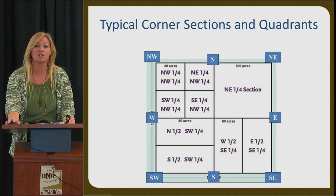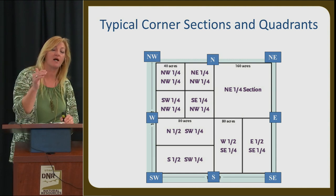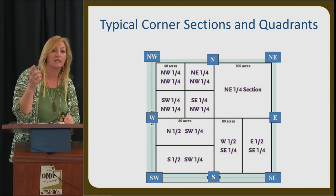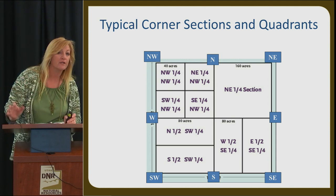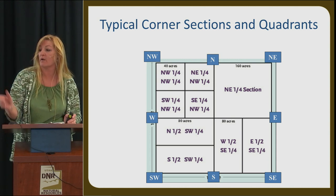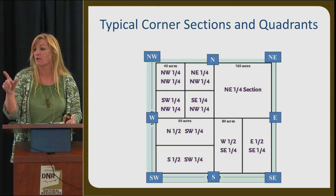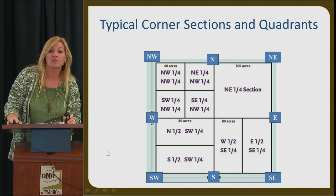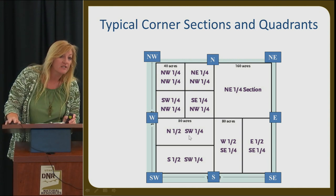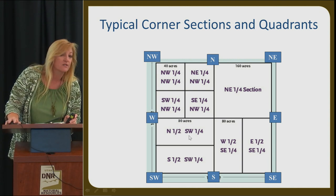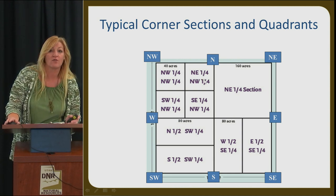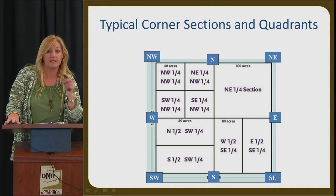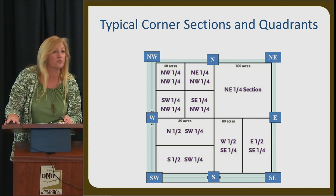This slide shows the quarter sections broken down. You can list the whole northeast quarter section, the north half of the southwest, the quarter sections themselves such as the northeast of the northwest. This is how we would break down your place of use on an application.